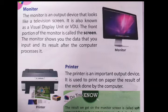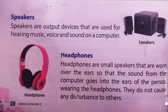Next is the printer. The printer is an important output device used to print the results of work done by the computer on paper — it prints text and images. The result shown on the monitor screen is called a soft copy, and when that result is printed on paper, it is called a hard copy.